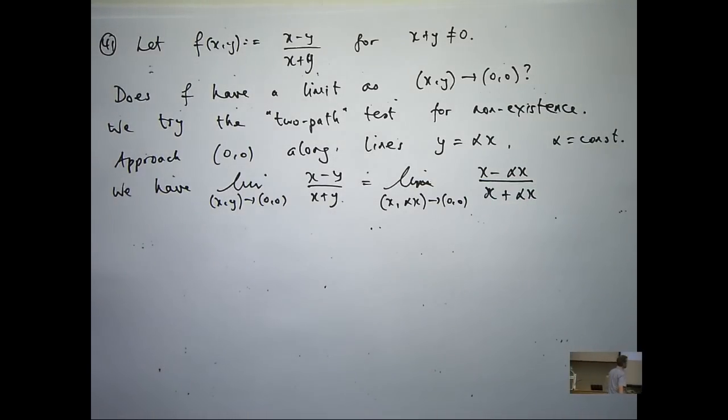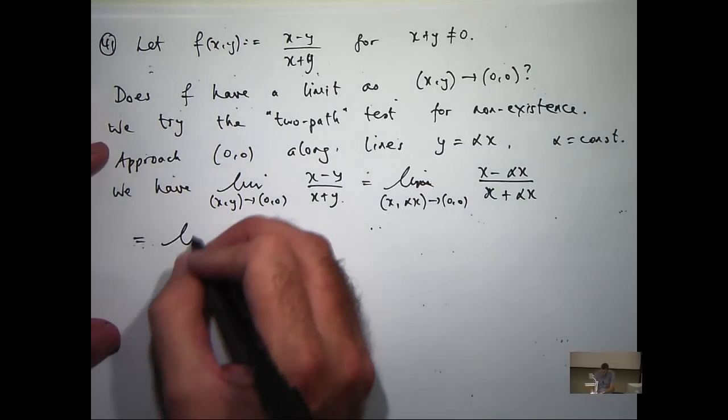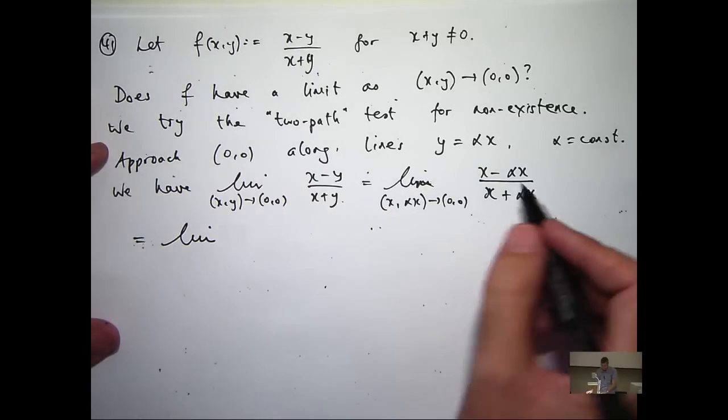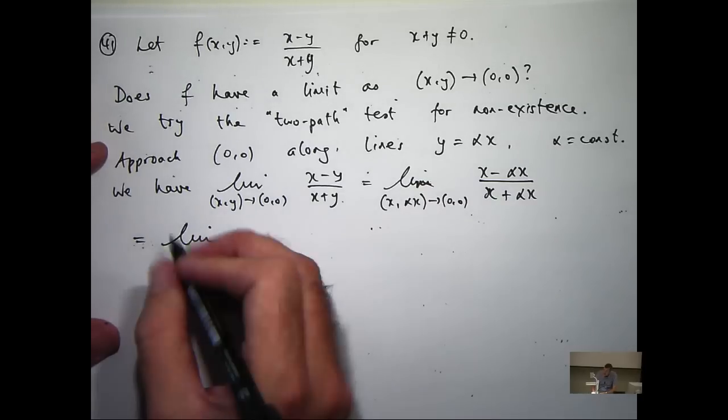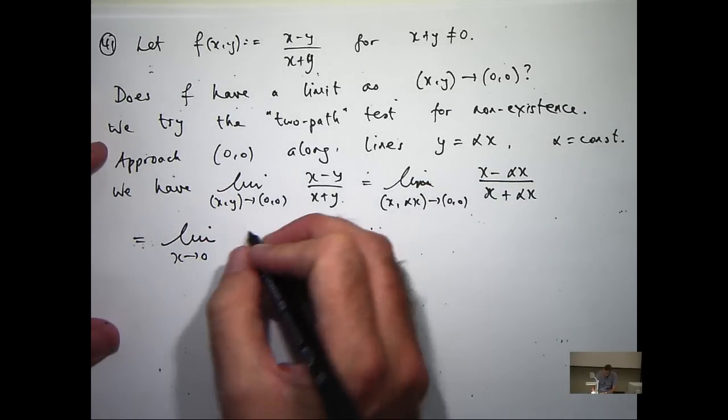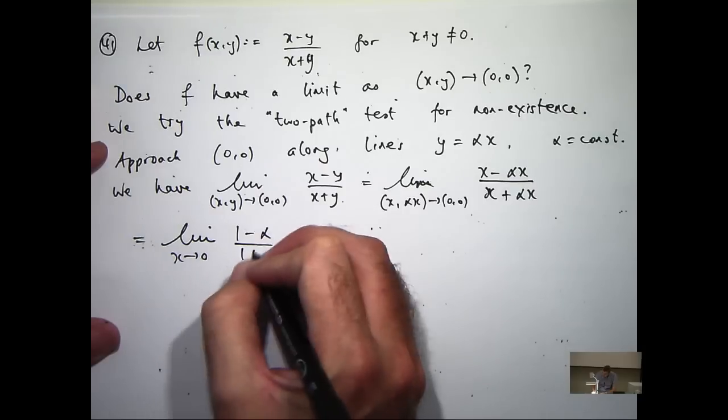Now I've got a common factor of x so I can factorize and cancel them off. I don't really need to worry about this anymore. So I'm going to have 1 minus alpha over 1 plus alpha.